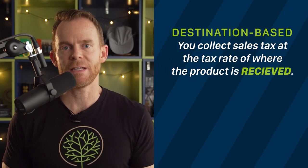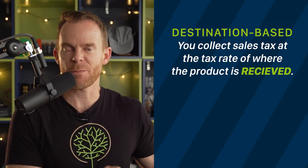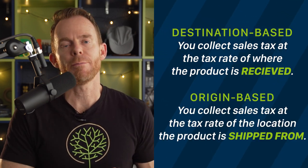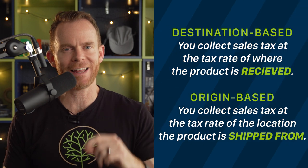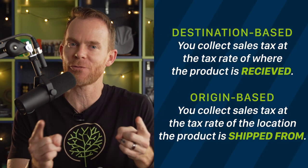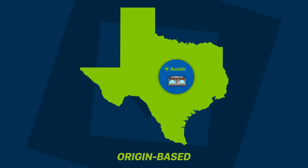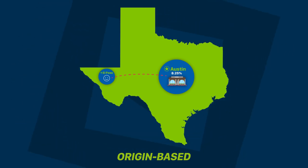Every state is either origin or destination based. Destination based means you are collecting sales tax at the tax rate of the location where the product is shipping to — where it is received. Origin based means you are collecting tax at the tax rate of the location from which the product was shipped. Texas is origin based. So if you ran a coffee shop in Austin, Texas, but you shipped coffee beans to a customer in El Paso, Texas, you would charge sales tax at the rate of your location in Austin, not at the tax rate of El Paso, because Texas is an origin based state.